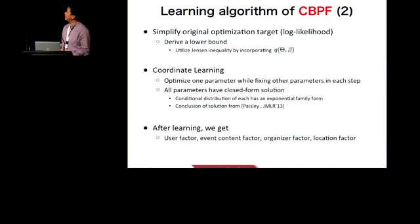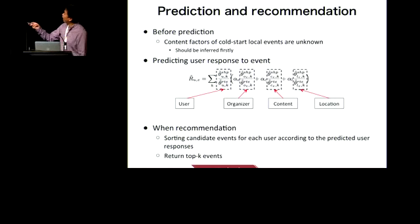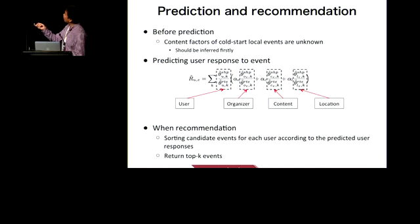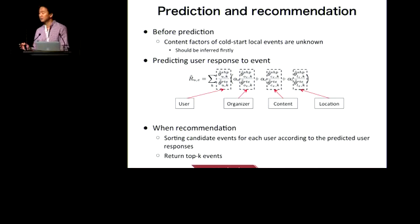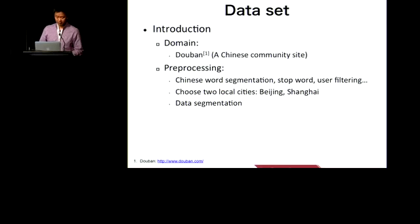So after learning, we can get the optimized user factor, event content factor, organizer factor, and location factor. We should be aware that before prediction, the content factor of cold-start local events is unknown, so it should be inferred automatically before we do final predictions. The prediction formula is listed here. The first part is the user factor, and the last three parts correspond to the organizer factor, content factor, and location factor, which are used to represent the event. And when making recommendations, this follows the general step for recommendation systems.